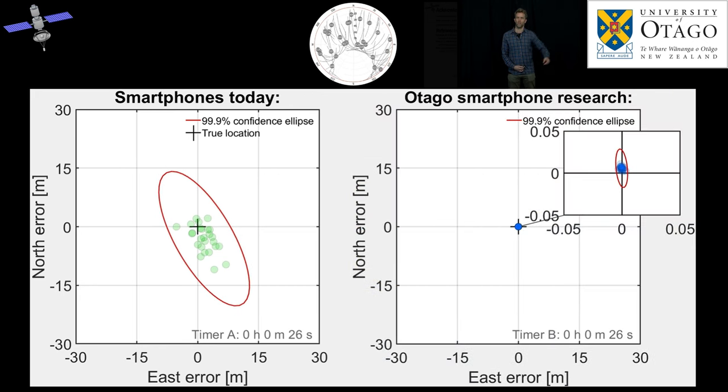On the right-hand side, the blue dots show the corresponding solution you would get if you would use our algorithms and mathematical models that we research here at the School of Surveying. And we need a five-centimeter level zoom in to see the corresponding solutions.